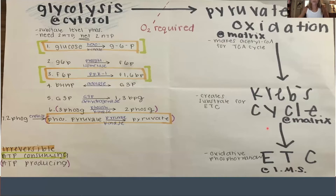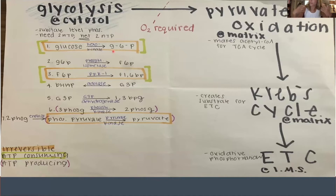After glycolysis, everything requires oxygen. Everything that's digesting glucose goes through glycolysis, but only if you're aerobic — meaning you have oxygen — will you go through these other steps, because these are all in the mitochondria, whereas glycolysis is in the cytosol, the jelly stuff of the cell.